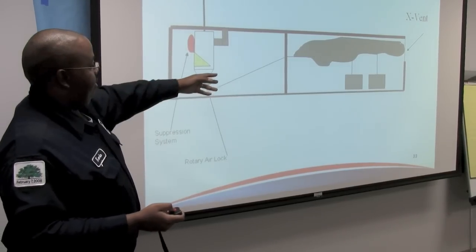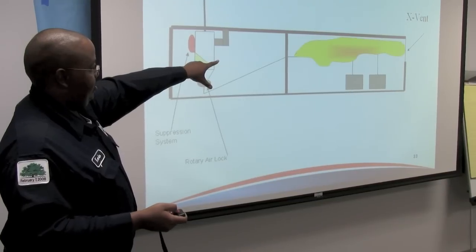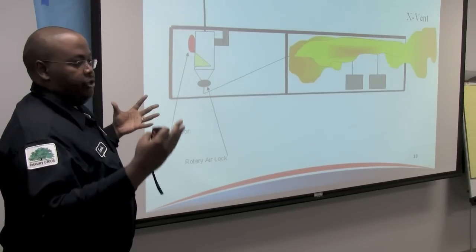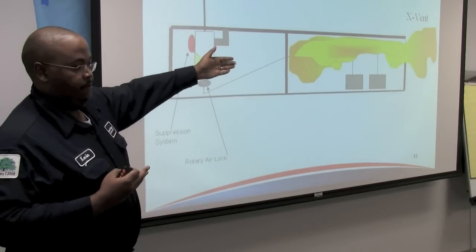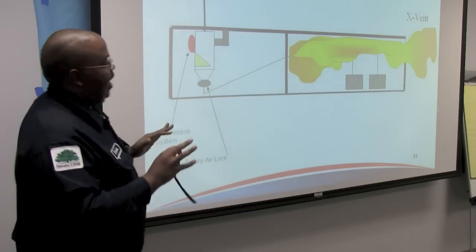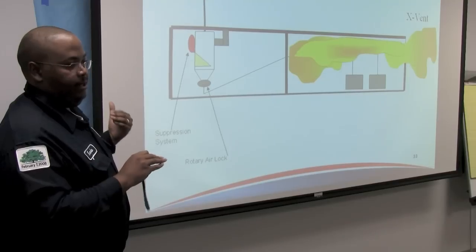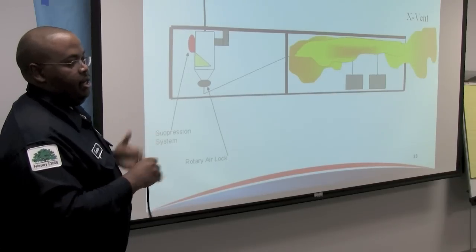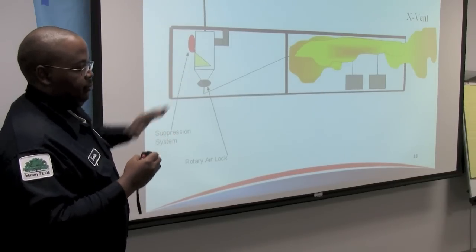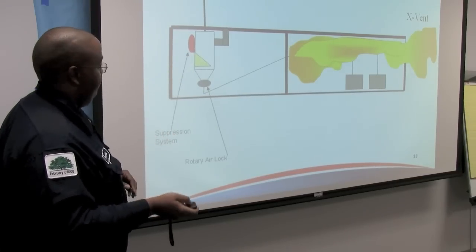Another explosion or deflagration ignites that layer of dust, and you have a larger-scale explosion that is now vented. These are the design features to consider: in the first scenario with no venting and nothing to relieve pressure, you have catastrophic loss. Whereas with proper design, you're venting in the event of an explosion to minimize that loss.